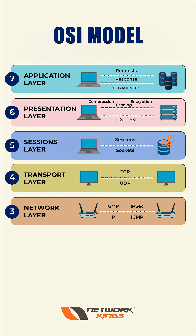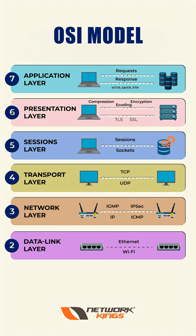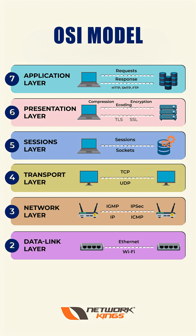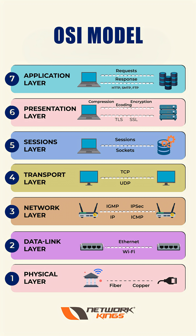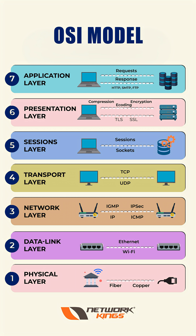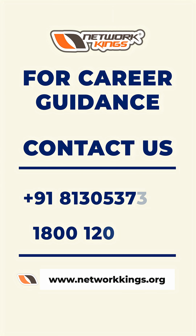Then the data moves to the data link layer, where Layer 2 switches work and a MAC address is added. Then the data moves to the physical layer, which converts all the data into zeros and ones, and all your signals, connectors, and everything works here.